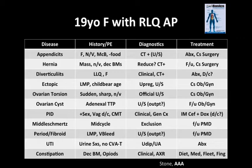Then there's mittelschmerz — what an awesome word. It's a diagnosis of exclusion in a patient with mid-cycle pain. UTI can definitely cause lower abdominal pain. Always dip the urine while getting the pregnancy test, and check for CVA tenderness.